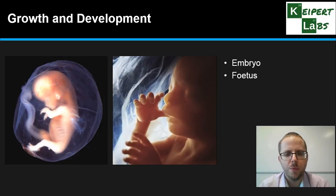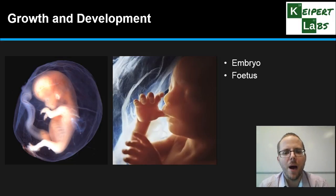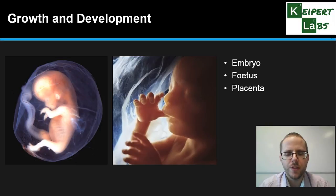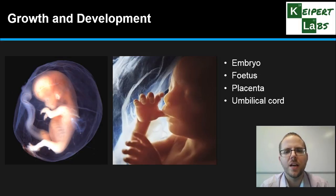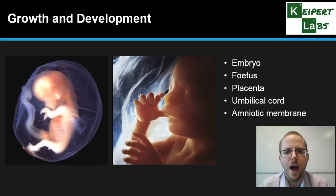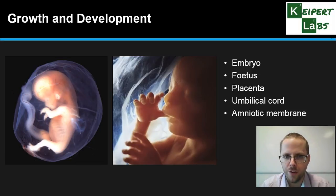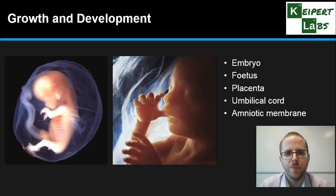It gets to a point at which it's fully developed, at around 40 weeks of gestation — that period of development inside the mother — and then the baby is ready to be born. The placenta nourishes it; the umbilical cord attaches the placenta to the baby at the belly button, or umbilicus. The baby is encased in an amniotic membrane, which controls water levels, helps protect it from the outside world, and controls what comes in and out of the baby's body.